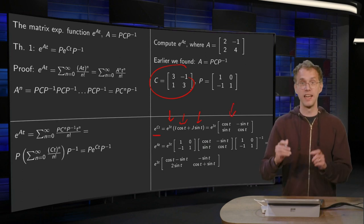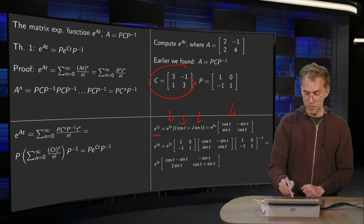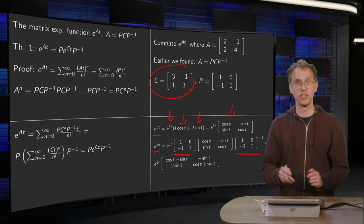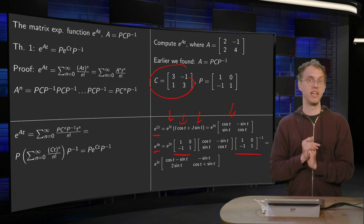So here we have our e to the power ct and for e to the power at, we just put a P and a P inverse around it. And there you have already e to the power at.